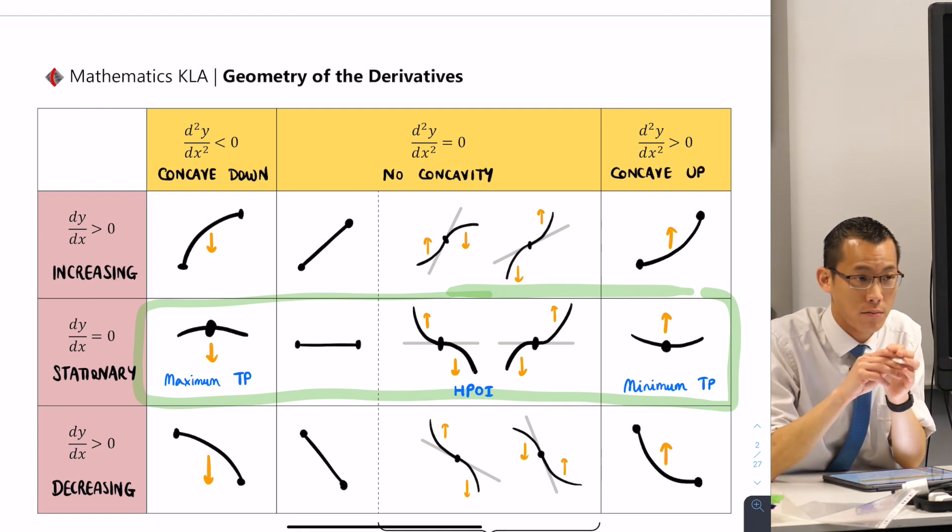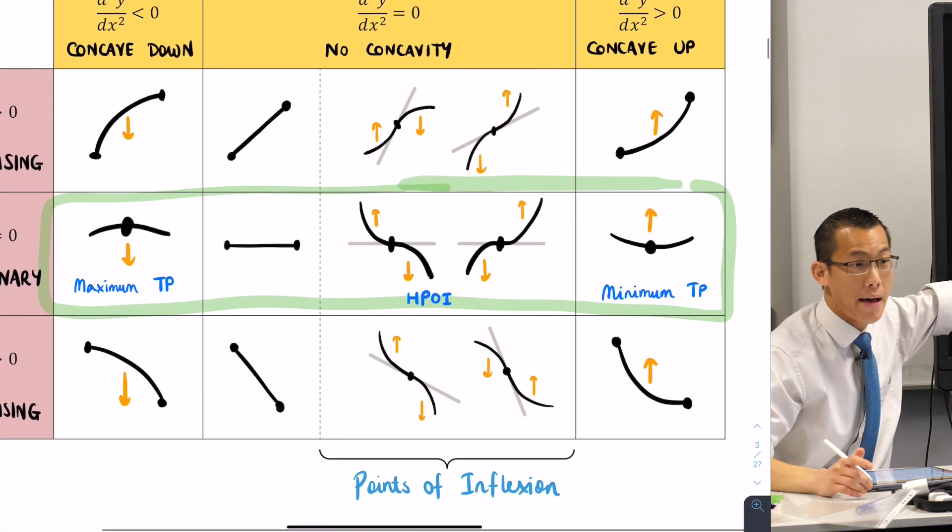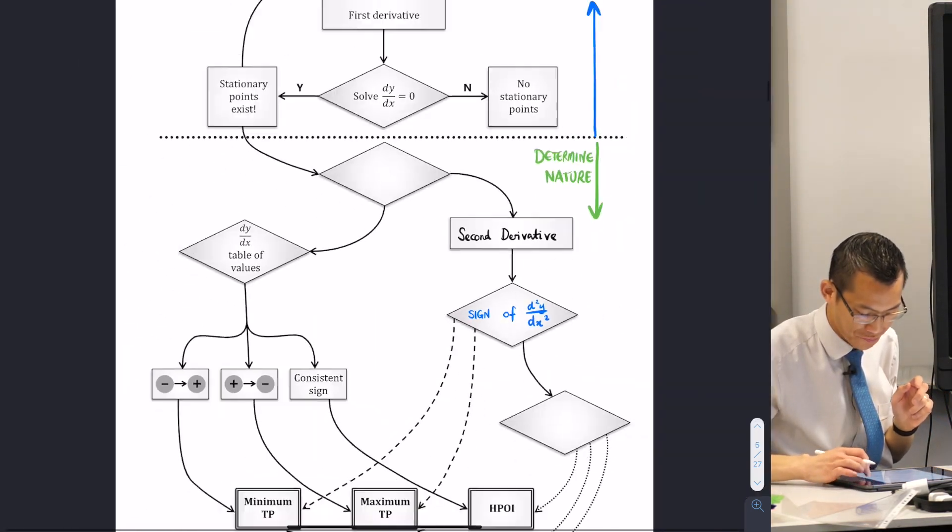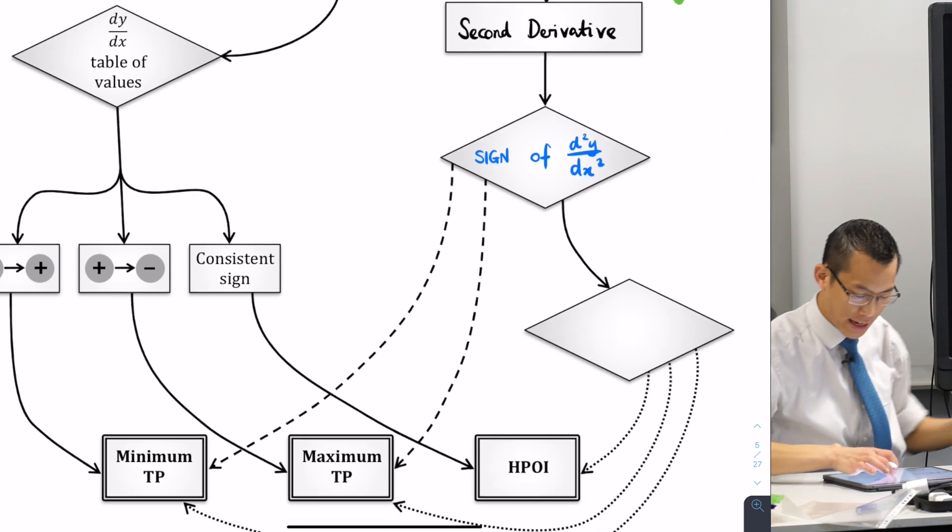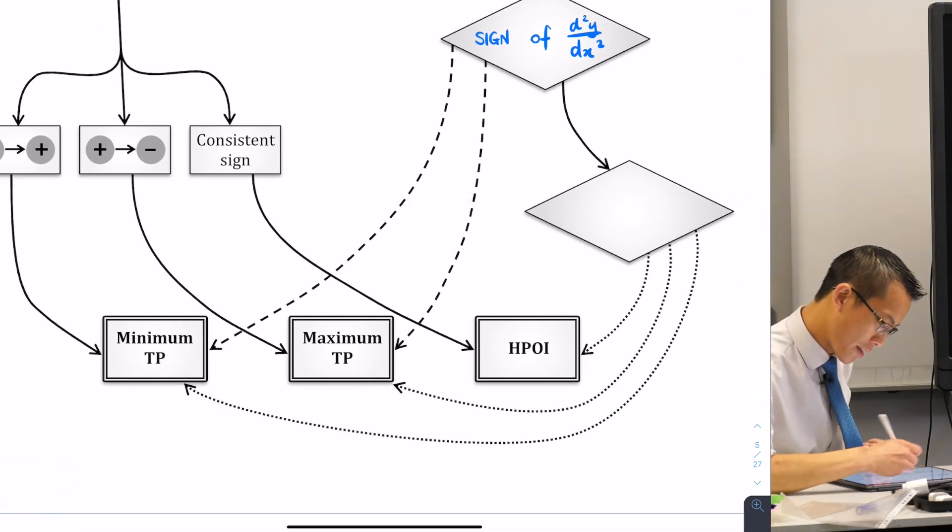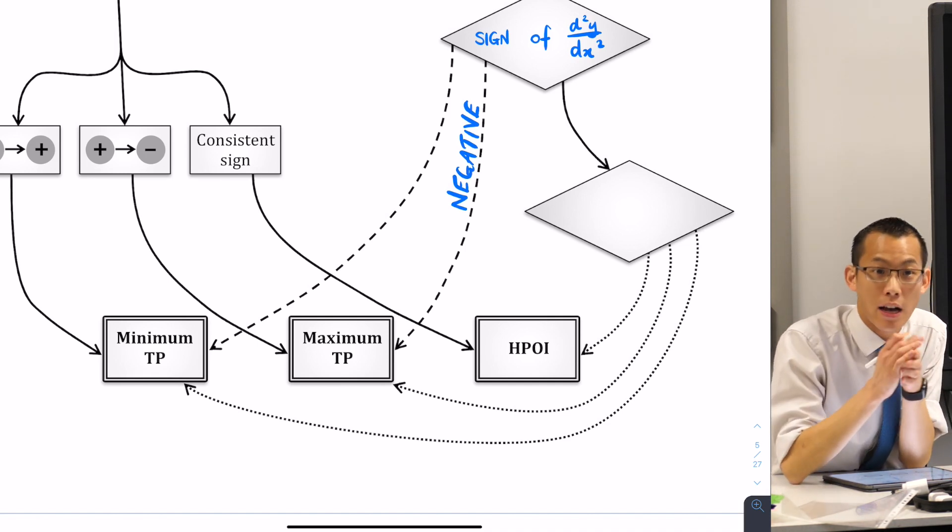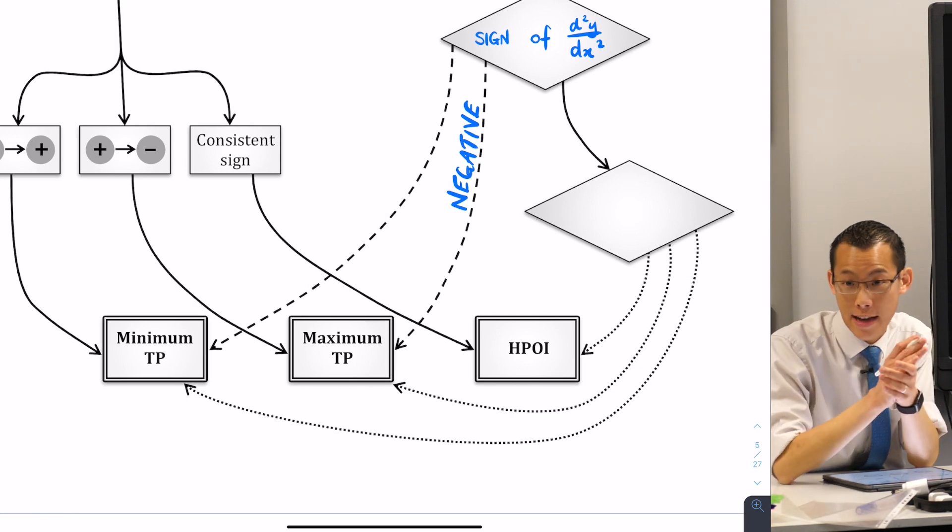It's concave down, which means it's a maximum. Does that make sense? It's a maximum. So if the second derivative is negative, I'm going to end on the maximum turning point. Does that make sense? So this dotted line here in the middle, this is what happens if the second derivative is negative. Straight away, no table of values required. You're like, oh, the second derivative happens to be negative three. Bam, I'm done. It's going to be a maximum.